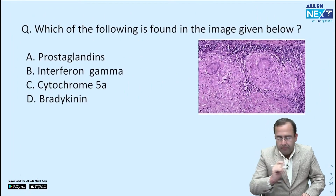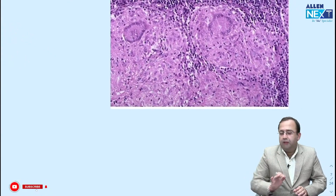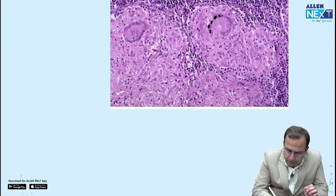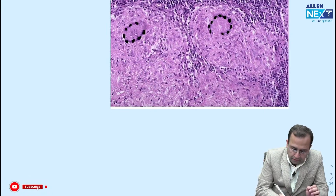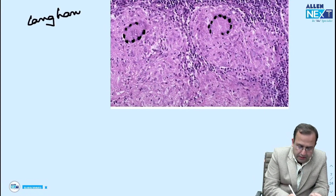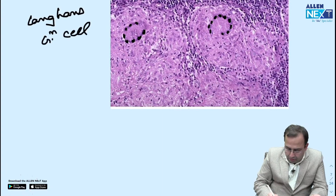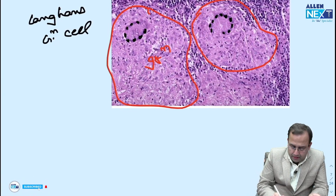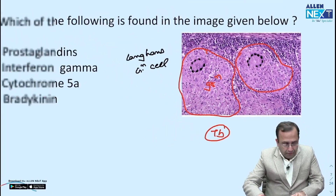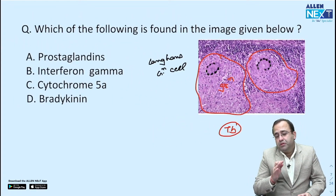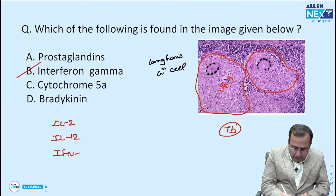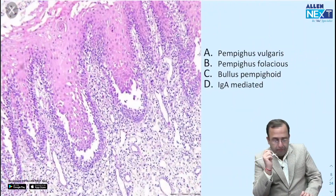Next — which of the following is found in the image given? I was told this was the exact image given in the exam. I can clearly see the presence of multinucleated giant cells having a horseshoe-shaped appearance — these are Langhans giant cells associated with TB. These are the granulomas in the background. So it was a case of tuberculosis. Which cytokine is associated? TB is associated with chronic cytokines — interleukin-2, interleukin-12, and interferon gamma.